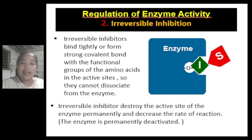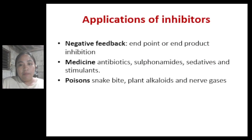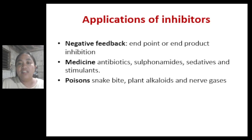The second mechanism for regulating enzyme activity is irreversible inhibition, as discussed earlier. Irreversible inhibitors bind tightly or form strong covalent bonds with functional groups of amino acids in the active site and cannot dissociate from the enzyme. They permanently destroy the active site and decrease the rate of reaction. Applications of inhibitors include negative feedback, endpoint or end product inhibition, medicine such as antibiotics, sulfonamides, sedatives, and stimulants, as well as poisons like snake bite toxins, plant alkaloids, and nerve gases.